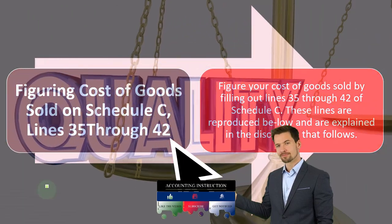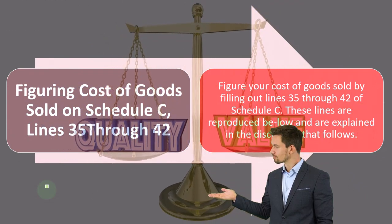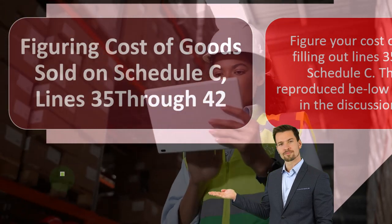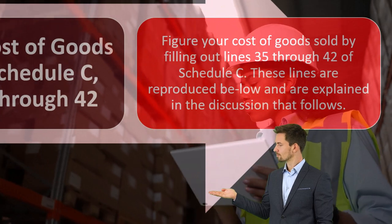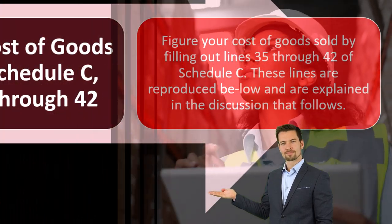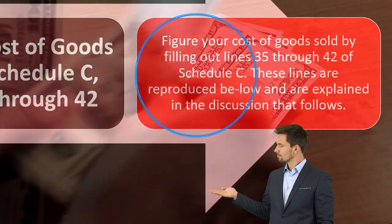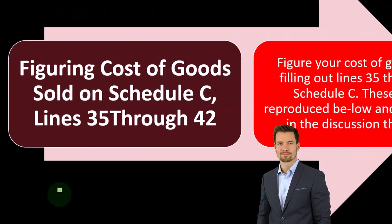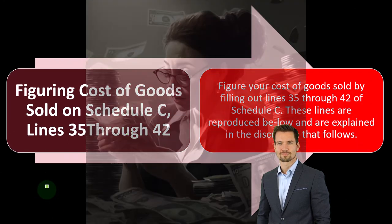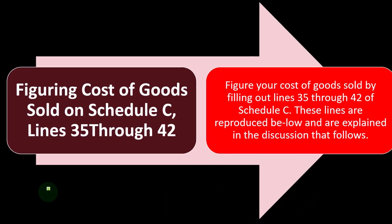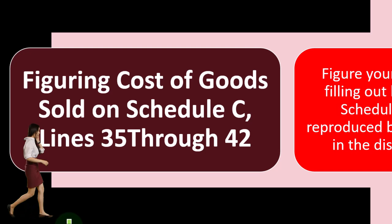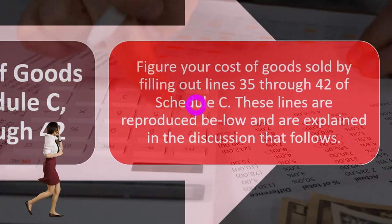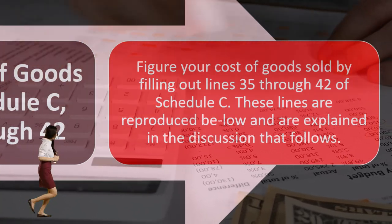Cost of goods sold is only relevant if you're dealing with inventory. As a general rule, if you're a service business, you typically won't have inventory and won't need to deal with cost of goods sold. Cost of goods sold is the expense related to the consumption of inventory in order to generate revenue — under the matching principle, we match expenses to the same period they were consumed. If you sell inventory as your primary revenue source, cost of goods sold is typically the biggest and most important expense, with a subtotal calculation called gross profit: income minus cost of goods sold.